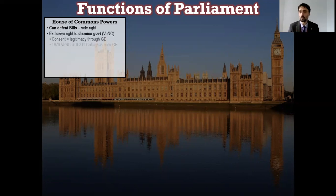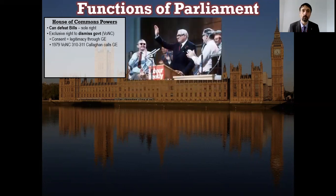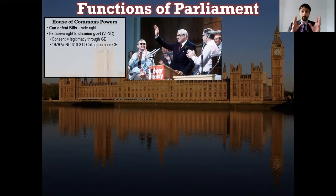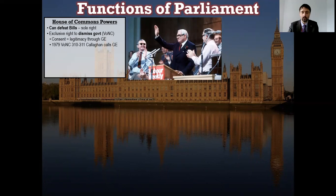The second power is the exclusive right to dismiss a government through a vote of no confidence - a VONC. This is because of the concept of consent. The executive is drawn from Parliament; we don't elect a government, we elect representatives. Parliament draws from it the executive of the winning party, so the government governs through the consent of Parliament, not the consent of the people directly. If Parliament removes that consent via a vote of no confidence, you have to go to a general election.